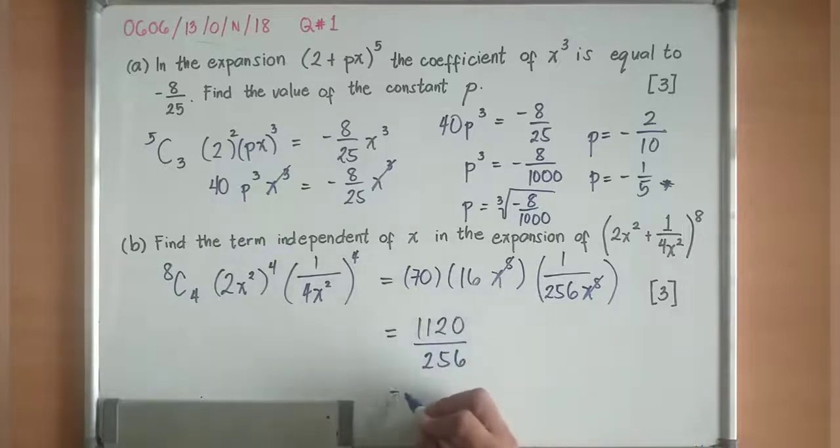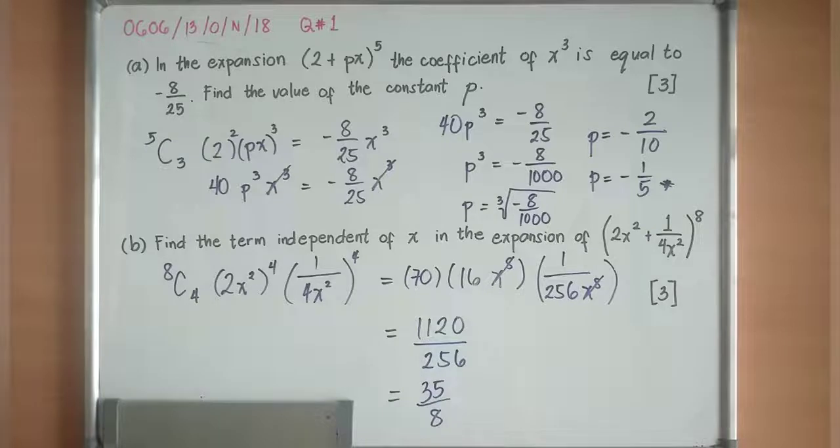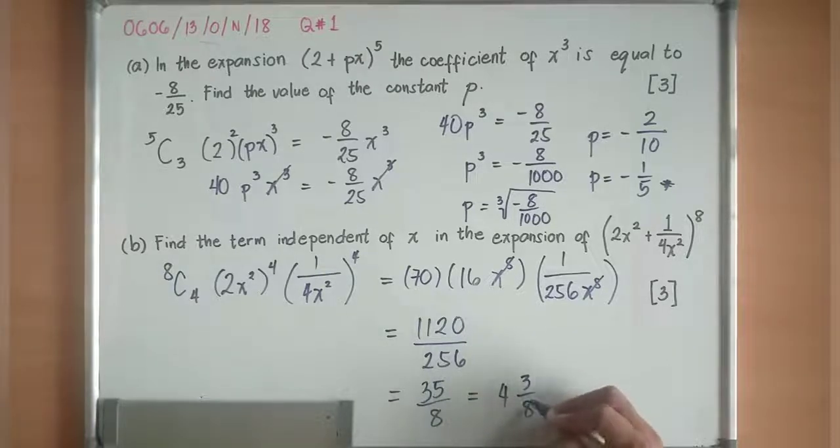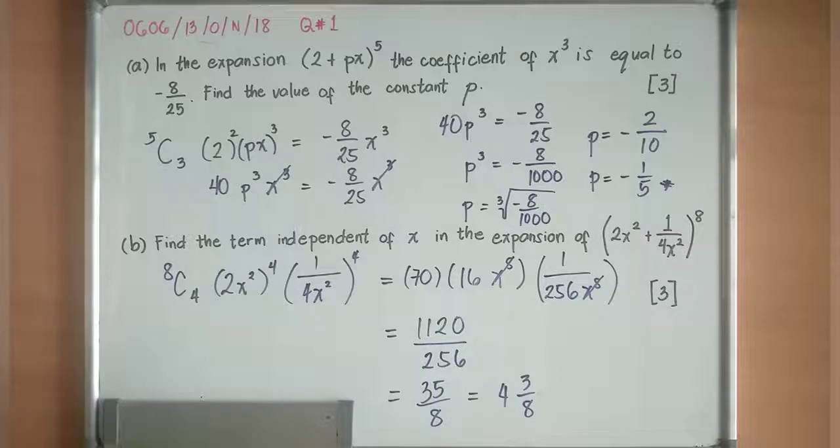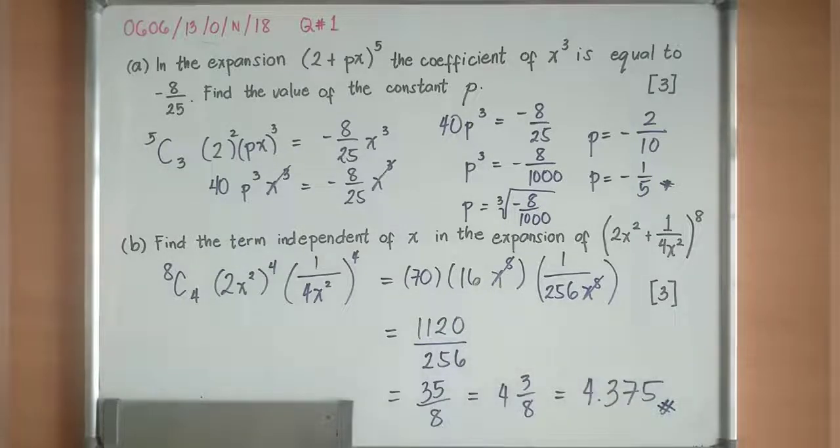So it will now be equivalent to 1120 divided by 256, you will come up with 35/8. This can be your answer. You can change this to a mixed number, which is 4 and 3/8, or you can also change this to a decimal number, which is equivalent to 4.375. It can be this, it can be this, or it can be 4.375.